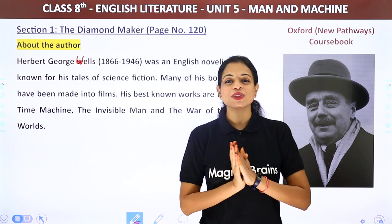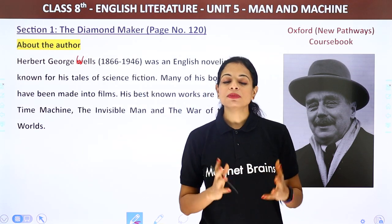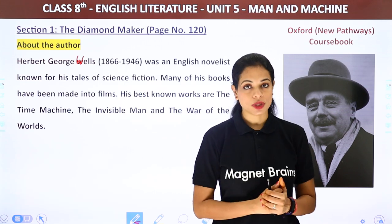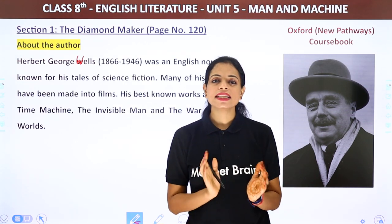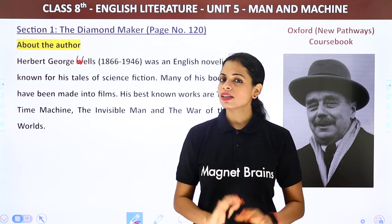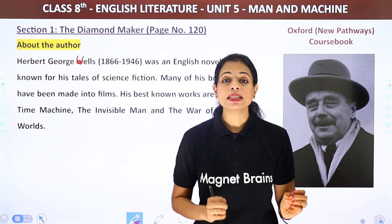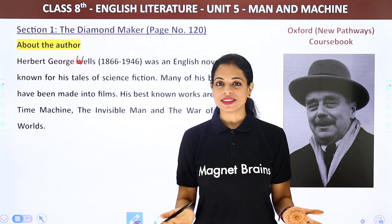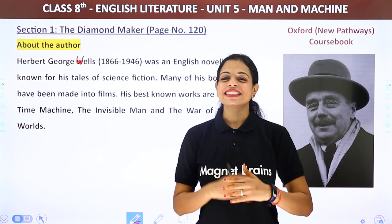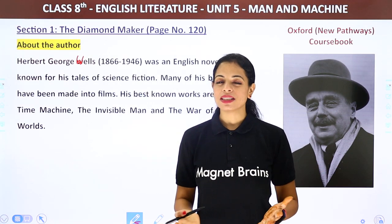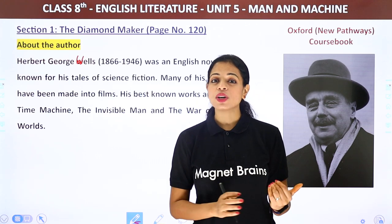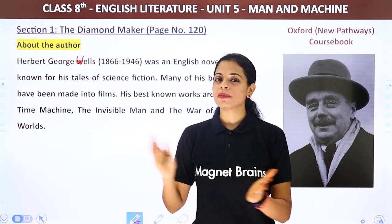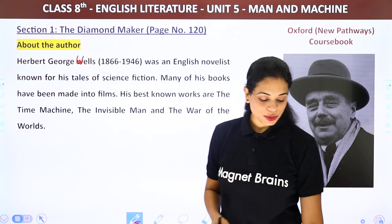The narrator of the story is H.G. Wells himself. Our narrator is a very simple person living a very simple life, and then he meets someone who is a diamond maker. But what happens? Exactly how does he become a diamond maker? Is he a fraud or is he really saying the truth? That's all we discover in the story. So let's start to read.